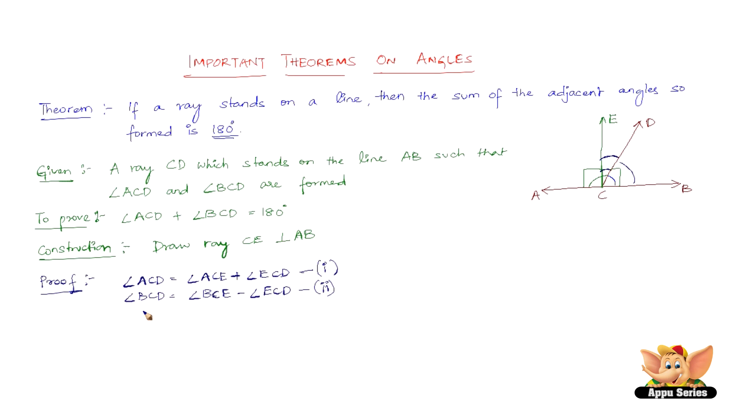Now, adding 1 and 2, we get angle ACD plus angle BCD. I think you are already starting to see why we are adding this because we need to prove angle ACD plus angle BCD equals 180 degrees. So we are already halfway through by getting the LHS in place. Now let us see what happens to the right hand side. So angle ACE plus angle ECD plus angle BCE minus angle ECD. Now, angle ECD plus angle ECD gets cancelled and all we are left with is angle ACD plus angle BCD equals angle ACE plus angle BCE.